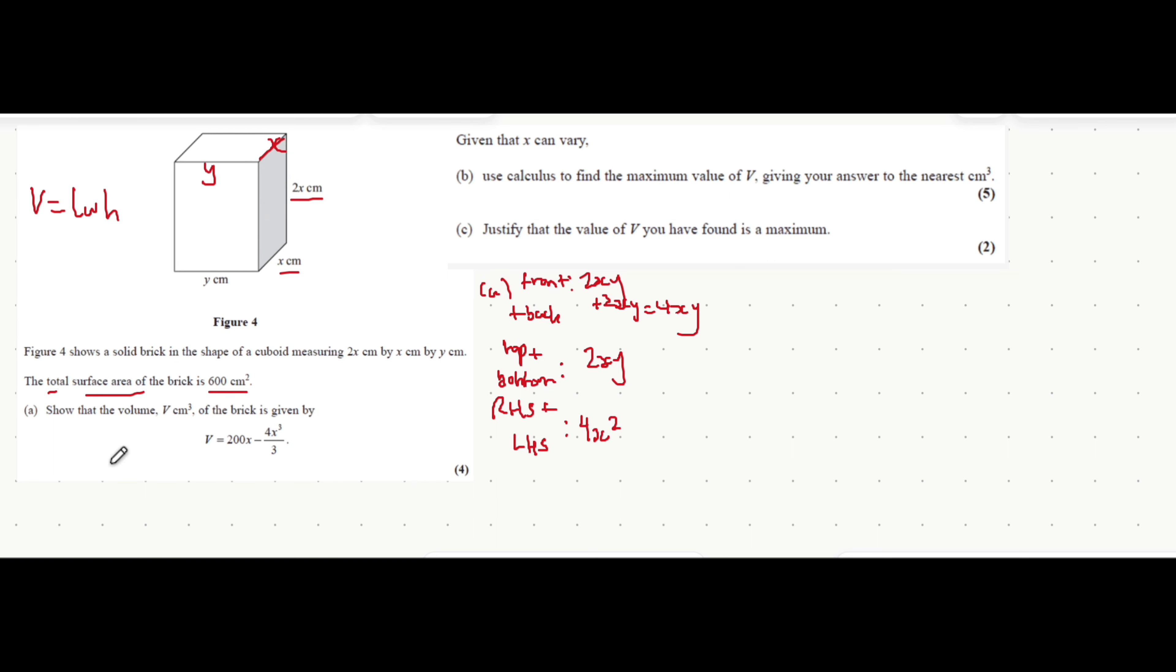The total surface area now is the sum of all of these. 2xy plus 4xy, they're like terms, they add to give 6xy. We can say that 4x squared plus 6xy is equal to that area of 600.